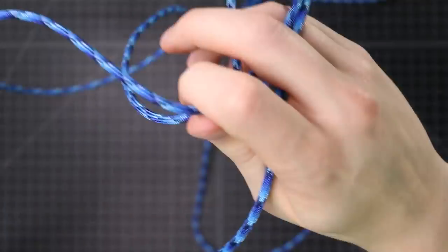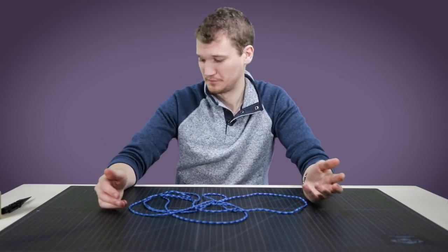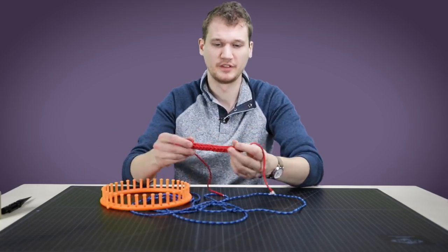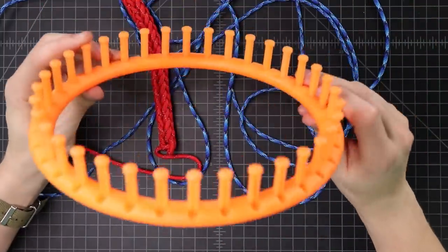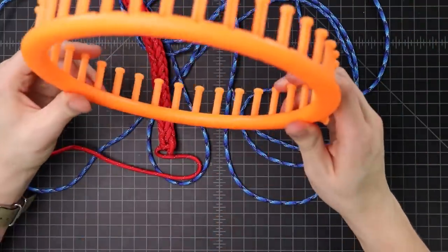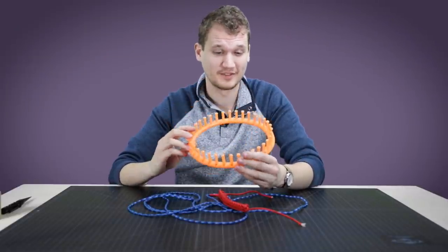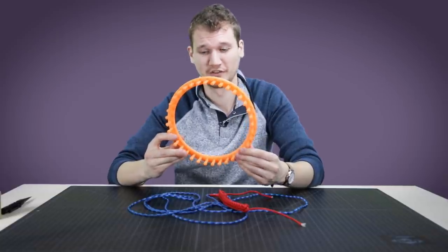So that is spool knitting. So I have not tried this yet but you can use the same method that we used for this little keychain fob or whatever it is with a larger loom to make like a hat. So if you'd like to see us make a paracord stocking cap or even a yarn one, let us know in the comments and we'll definitely cover that in a future video. All the supplies that we used in this video you can find in our store.